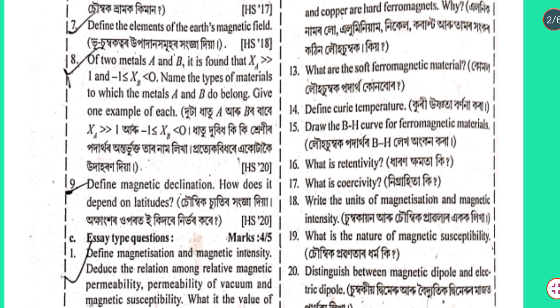Question number 8: Of two metals A and B, it is found that the susceptibility of A, χA, is very much greater than 1, and the susceptibility of B, χB, is greater than or equal to minus 1 and less than 0. Name the types of materials to which metals A and B belong, and give one example of each.